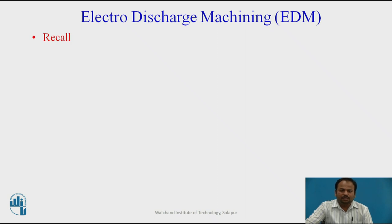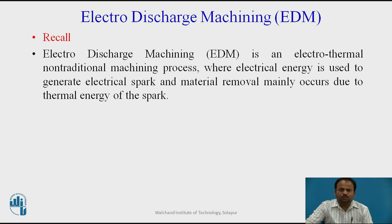Before going to discuss Electro-Discharge Machining, first of all we will recall what category this particular Electro-Discharge Machining falls in. EDM is coming in the category of Electrical System because here we are making use of Electrical Current. Electro-Discharge Machining is an Electro-Thermal non-traditional machining process where Electrical Energy is used to generate Electrical Spark, and Material Removal mainly occurs due to Thermal Energy of the Spark.